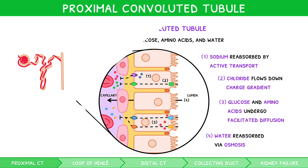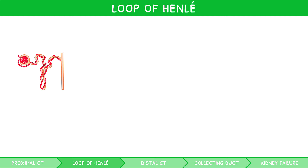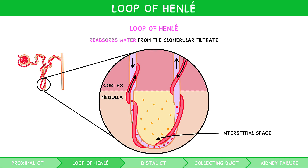With the reabsorption of ions discussed, let's move on to the next section, the loop of Henle. The IB Biology syllabus includes lots of detail on the process by which the loop of Henle reabsorbs water from the glomerular filtrate. In the medulla, between the descending and ascending limb is a region of space termed the interstitial space. This contains a solute concentration of 1200 milliosmoles.